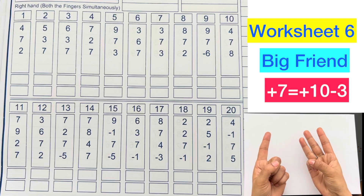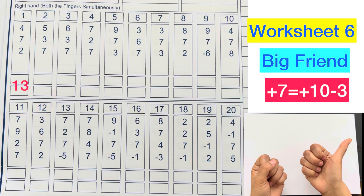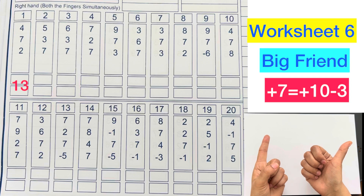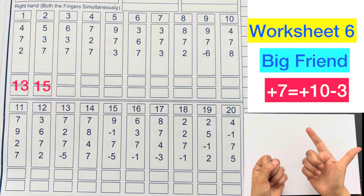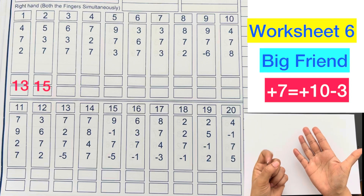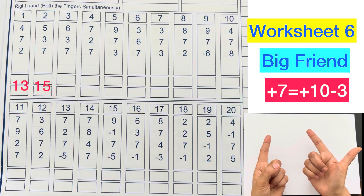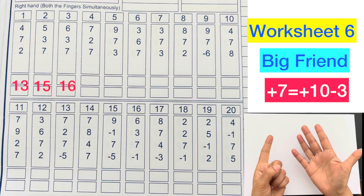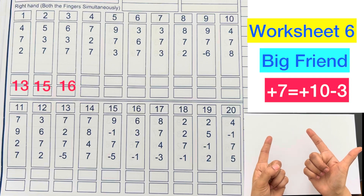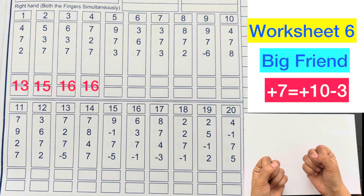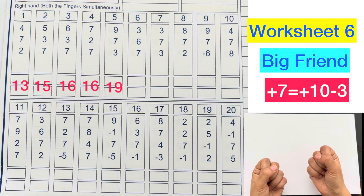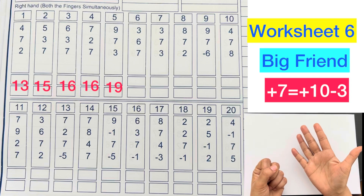Answer is 13. 5 plus 3 plus 7 plus 10 minus 3, answer is 15. 6 plus 3 plus 7 plus 10 minus 3, answer is 16. 7 plus 2 plus 7 plus 10 minus 3, answer is 16. 9 plus 7 plus 10 minus 3 plus 3, answer is 19.